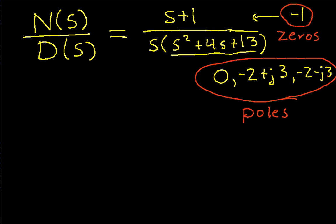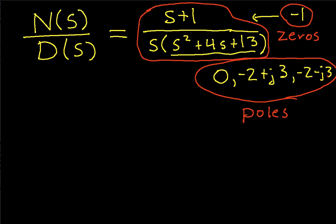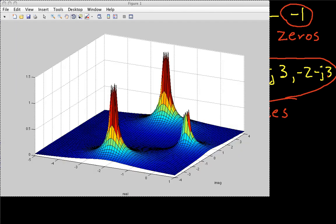Let me explain why we use those terms. What I've done is plotted the magnitude of this polynomial as a function of s. Since s is complex, the polynomial evaluated at any point in the complex plane gives a complex value. I've computed the magnitude of that complex value at different points in the complex plane, and when you plot it, you get something that looks like this.